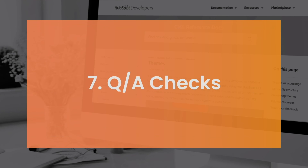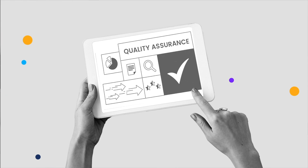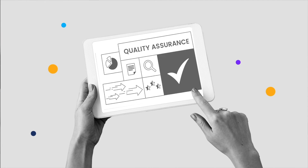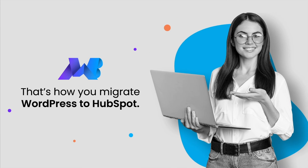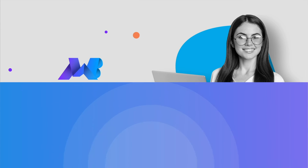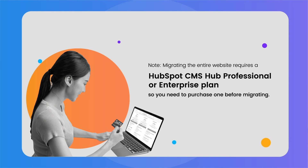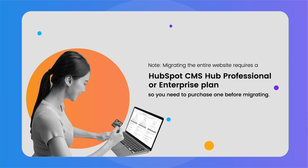QA checks. Once done, you can perform some QA checks to test URLs, responsiveness, etc. And that's how you migrate WordPress to HubSpot. Note: migrating the entire website requires a HubSpot CMS Hub Professional or Enterprise plan, so you need to purchase one before migrating.